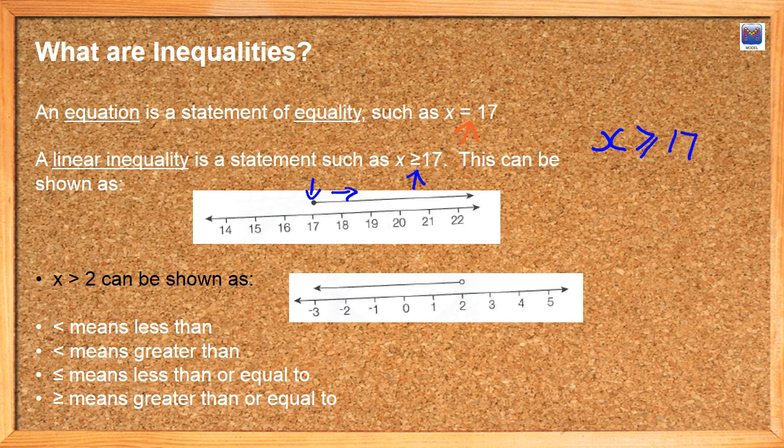So we know that x is any number from 17 onwards. Now that's different to this scenario down here. x is greater than, x is less than 2. It should be yellow. x is less than 2. Now that means that x is not 2, but it is anything less than 2.